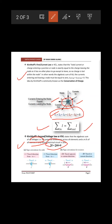For sign conventions in KVL: if we move from negative to positive inside a cell, we take the EMF as positive. If we move from positive to negative inside a cell, we take the EMF value as negative.